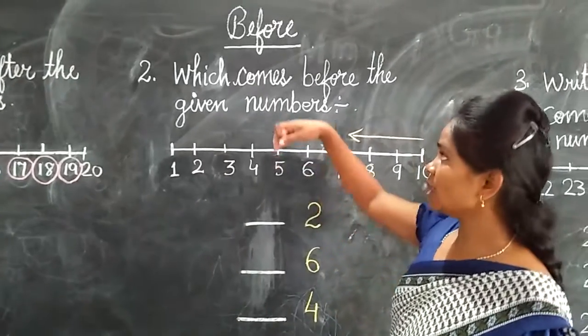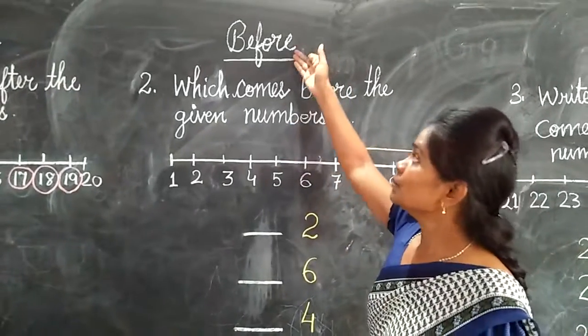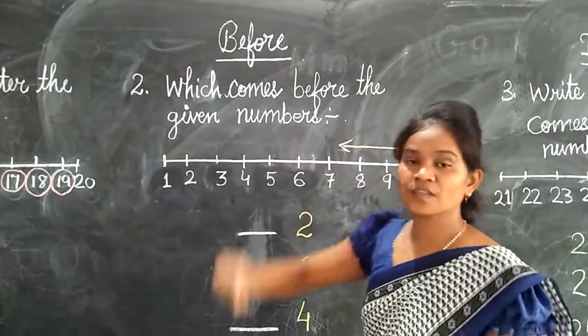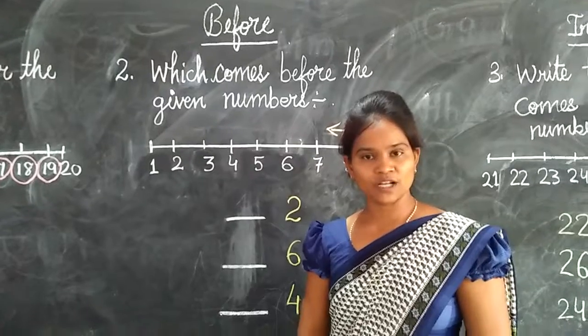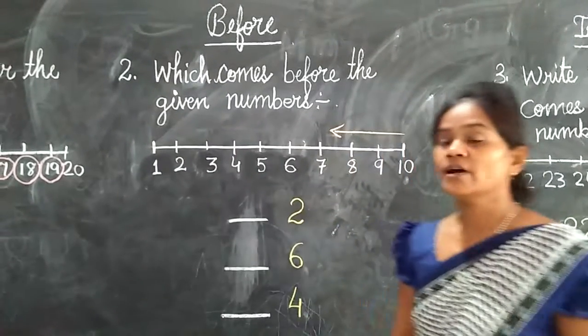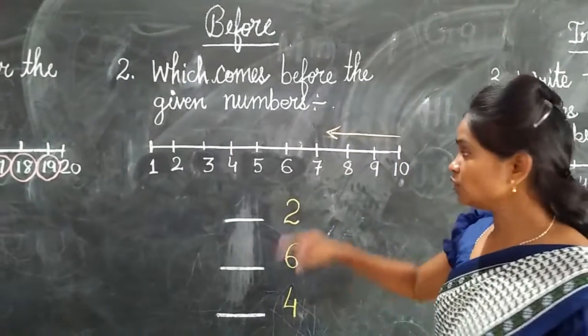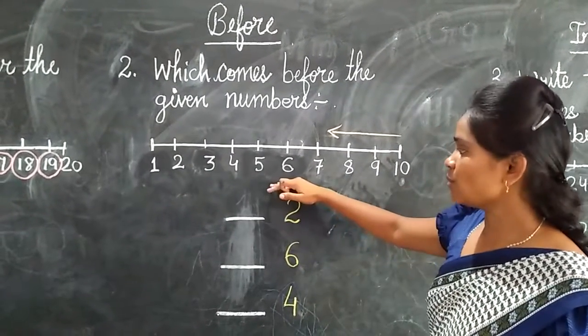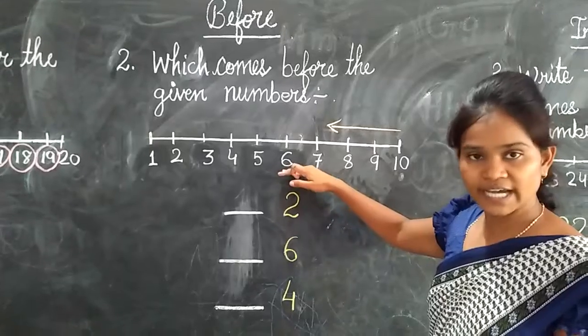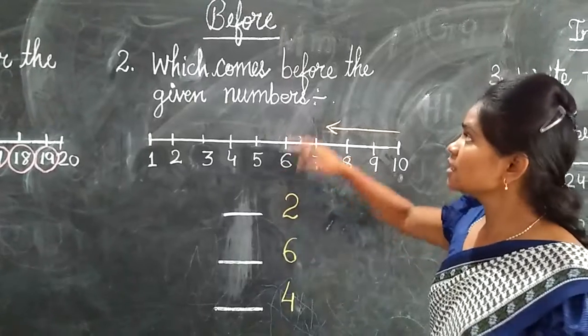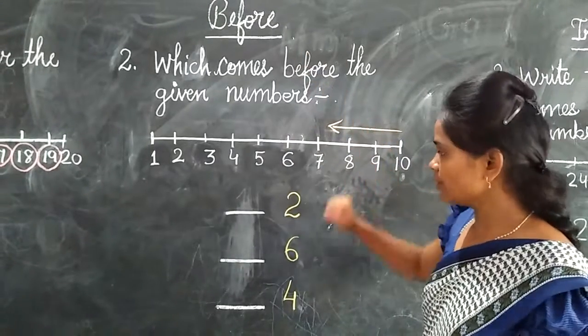Now we will learn about before. What do you mean by before number? When we count backward from the given number, we get the number before.